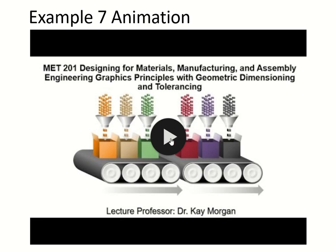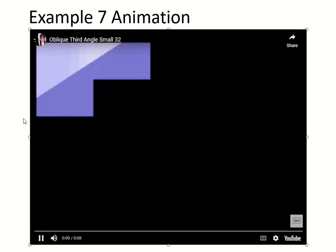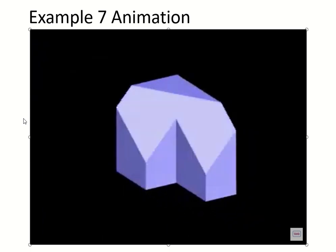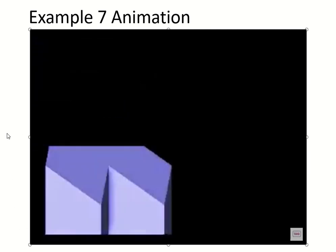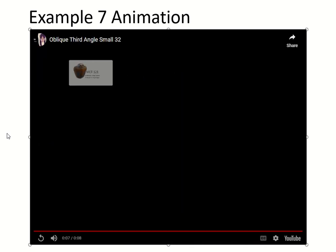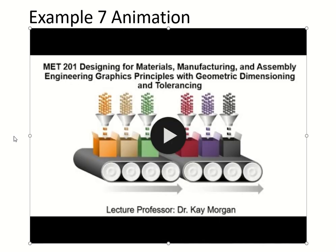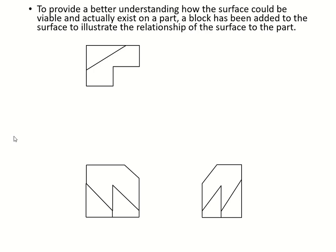So let's take a look at our animation. Your top, and then your front, and then your right, and this is your pictorial. We'll do it again. Your top, your front, your right, and then your pictorial. So that's your oblique surfaces.